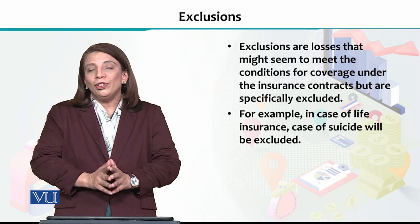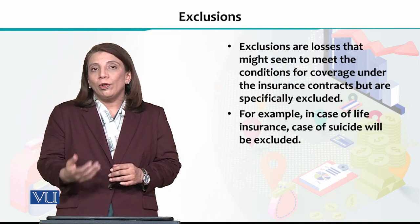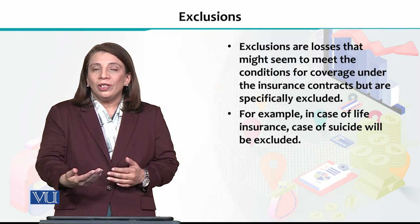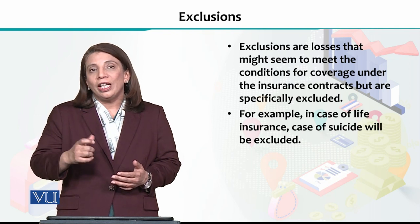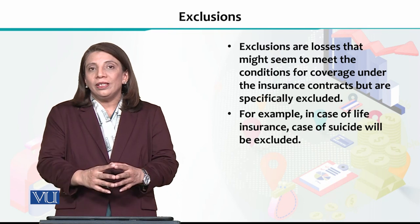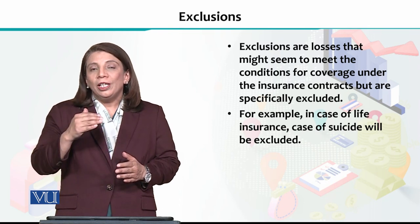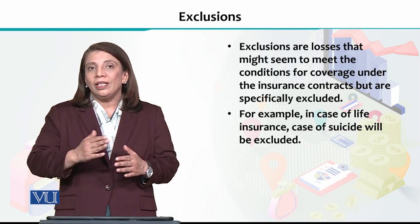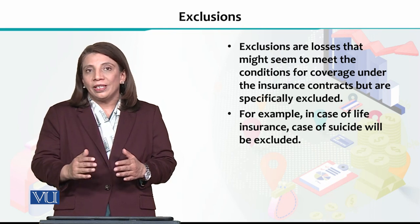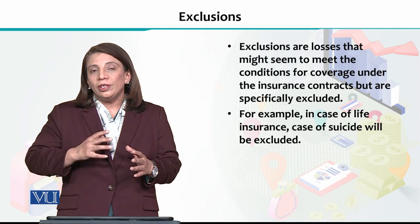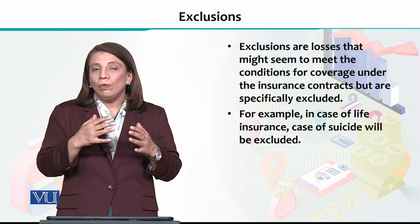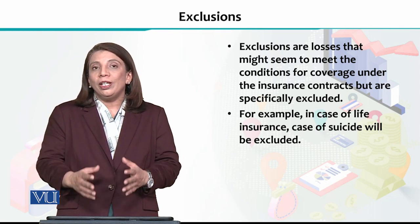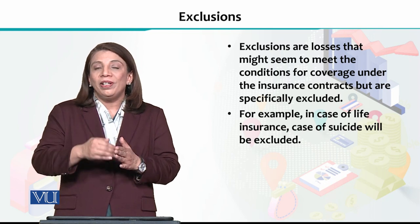Similarly, if a man has bought a life insurance policy for 20 lakh rupees or 1 crore rupees and he commits suicide, that is also a case of exclusion — the policy will not cover it. Insurance companies define certain exclusions where, in specific types of accidents or possibilities, they cannot cover your losses. Whenever we are going to buy an insurance policy, we need to learn about the various exclusions that may be involved in that particular contract.